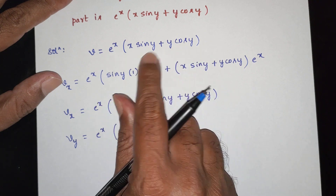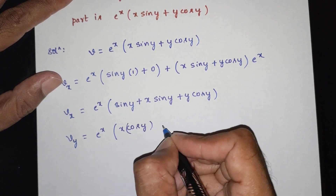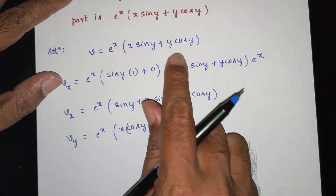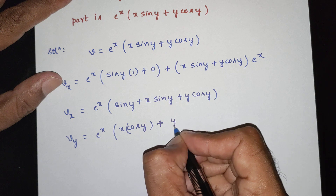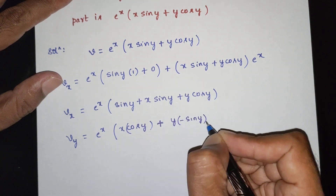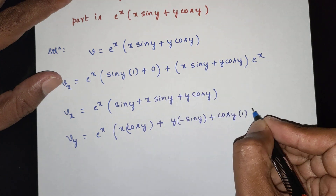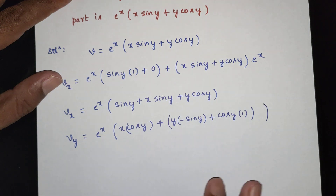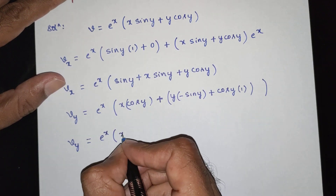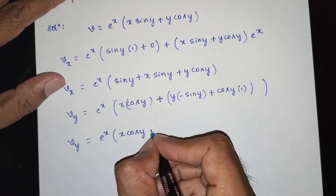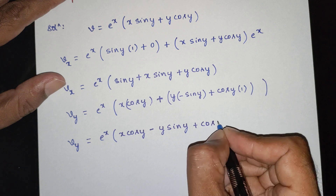Here, differentiating sin y gives cos y. So vx is equal to e power x times cos y. Next, vy is equal to e power x times cos y, then x minus y times sin y plus cos y.